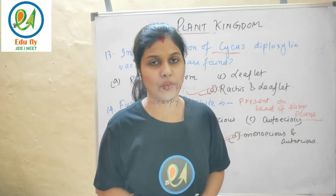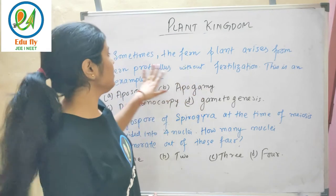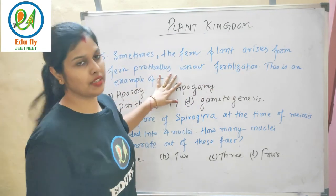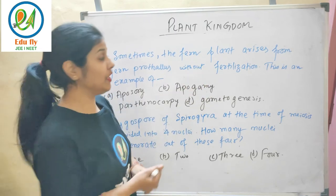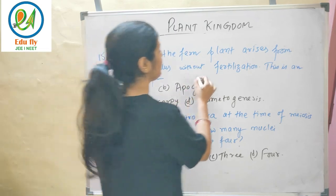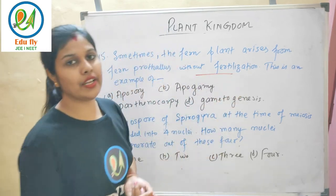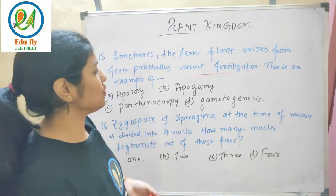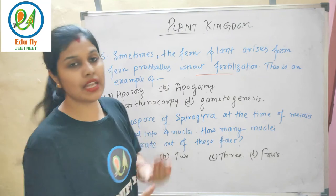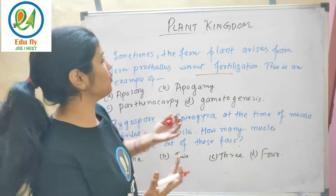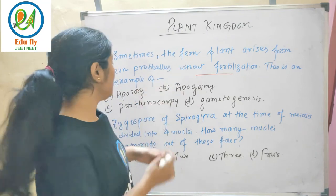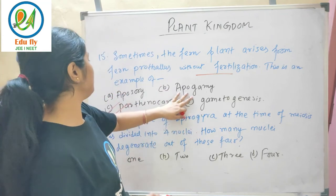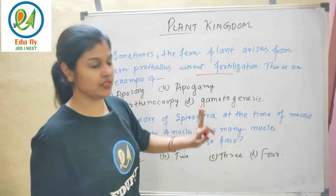Sometimes a fern plant arises from the prothallus without fertilization. This is not parthenocarpy or gametogenesis. The options are apospory, apogamy, parthenocarpy, and gametogenesis.